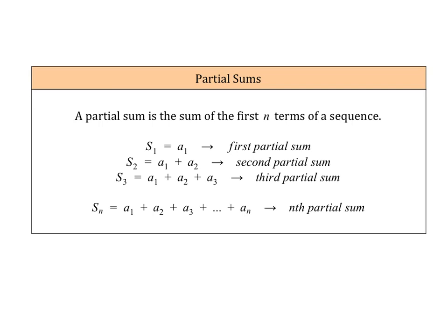The last topic today is partial sums. A partial sum is the sum of the first n terms of a sequence, denoted s_sub_n. s_sub_1 is the first partial sum — just the first term. s_sub_2 is the sum of the first two terms. The third partial sum is the sum of the first three terms, and the nth partial sum is the sum of the first n terms.